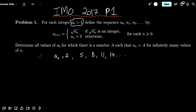The problem now asks: what values of a0 are there for which there is a number a such that a_n equals a for infinitely many values of n? Essentially, for what initial value will the sequence eventually become periodic and start cycling?